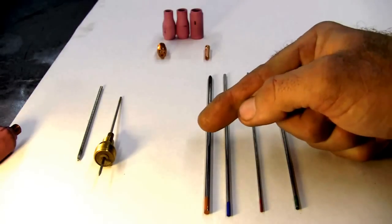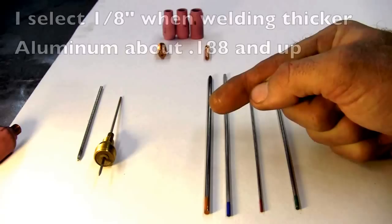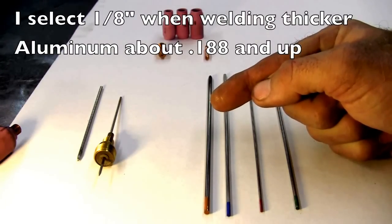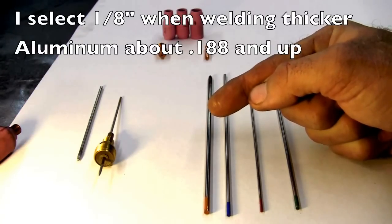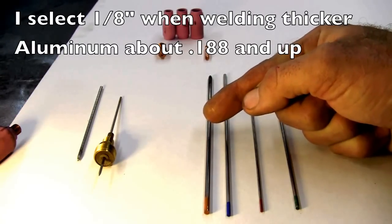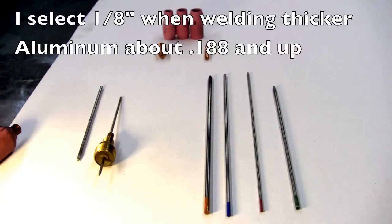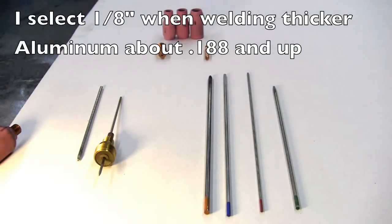I do switch over to the full 1/8 inch when I'm doing aluminum, it just stabilizes better. There's a better ability to absorb the heat that's put into it with the high frequency and high balance that I use. So I jump up to 1/8 when I'm about in 188 wall aluminum up.